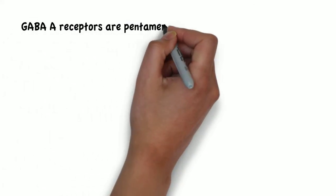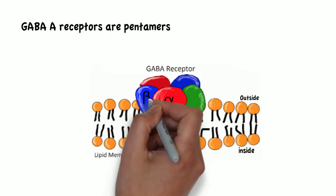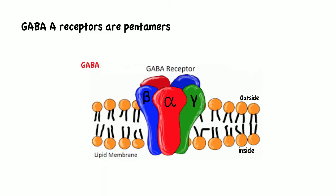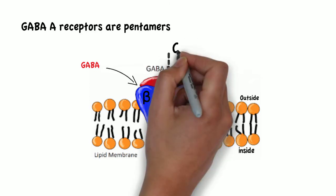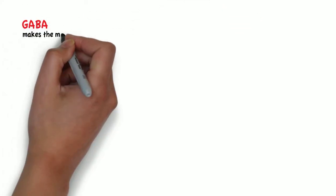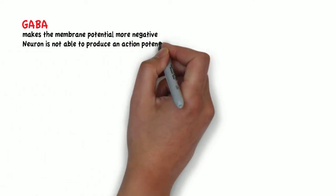GABA-A receptors are pentamers, made up mainly of different alpha, beta, and gamma subunits. When GABA binds to the receptor between alpha and beta subunits, it leads to the opening of the channel and an influx of chloride ions, which will hyperpolarize the cell, meaning it will make the inside of the cell more negative in relation to its outside. Therefore, GABA makes the membrane potential more negative and thus the neuron is not able to produce an action potential.